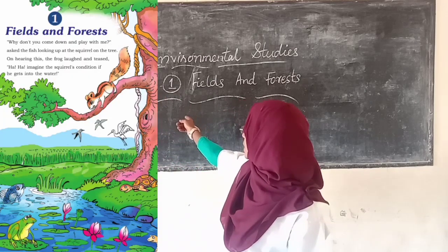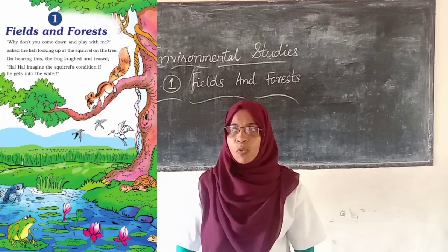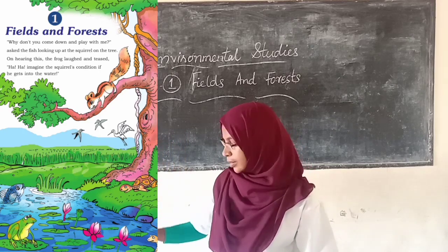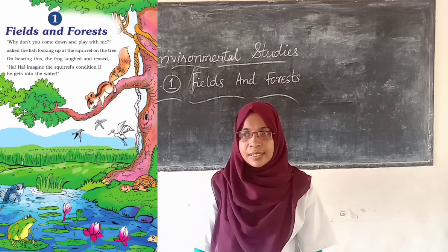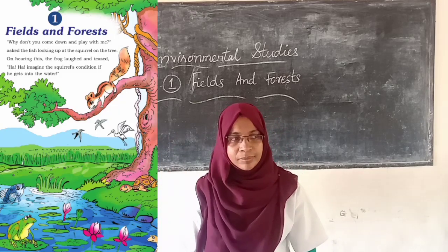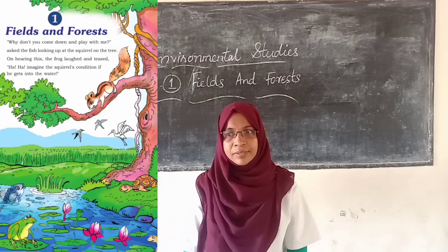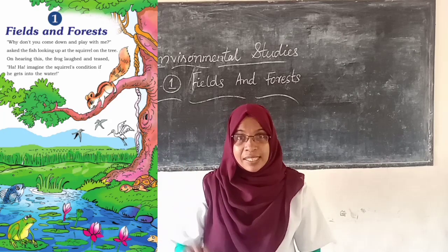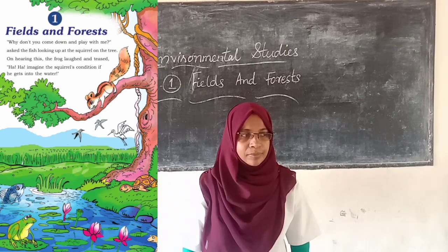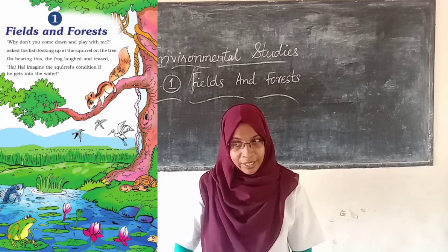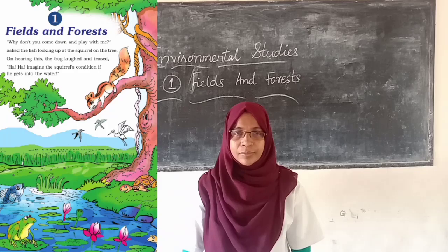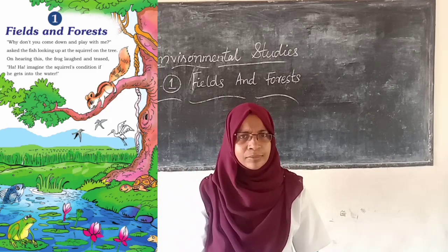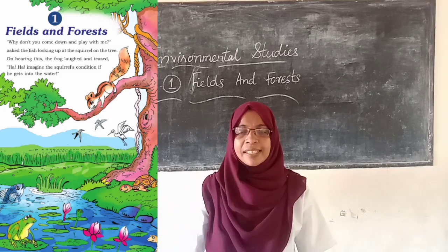Look at the beautiful picture. What do you see in this picture? Frog. Fish. Where is the squirrel? On the tree. There is also a river and a lotus.